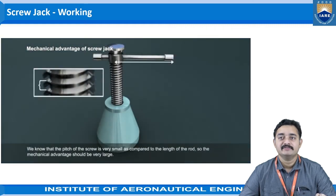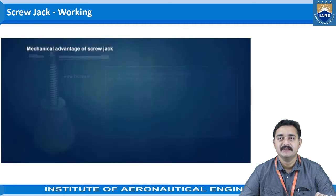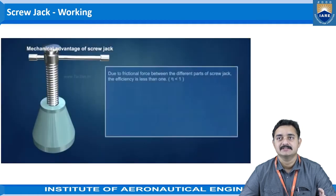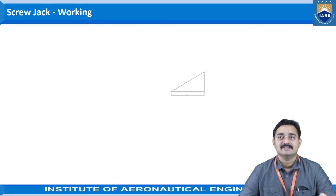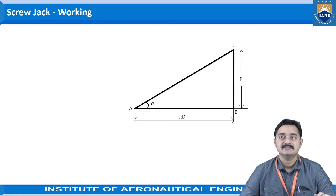We know that the pitch of the screw is very small compared to the length of the rod, so the mechanical advantage should be very large. Due to the frictional force between the different parts of the screw jack, the efficiency is less than 1. Now let us understand this working using the figure.